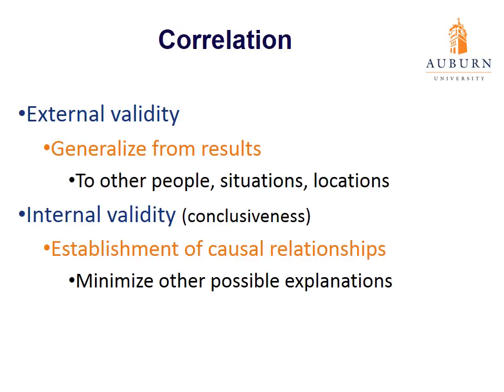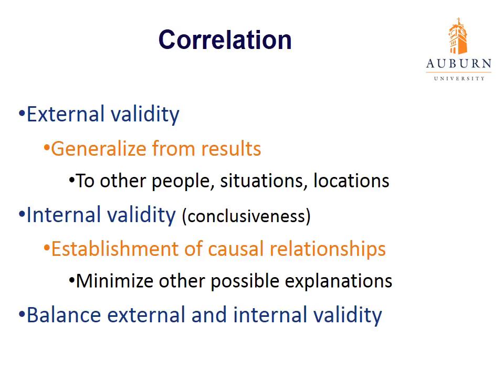External validity has to do with selection — how we select from a population. If we do so randomly, external validity will be higher because we can then infer to the overall population. The thing is, external and internal validity are often at odds with each other. The higher your external validity, the lower your internal validity tends to be, and vice versa. The higher your internal validity — the more you minimize other possible explanations — the less externally valid your study tends to be. We're always trying to balance the two, and it is rare to have a study that is high on both.